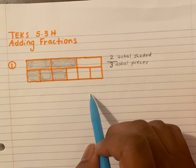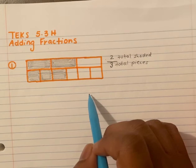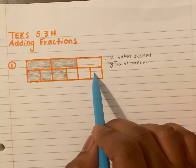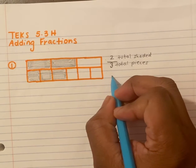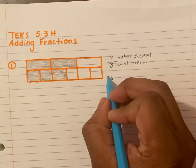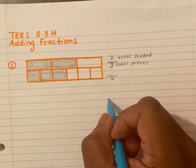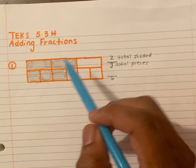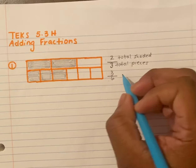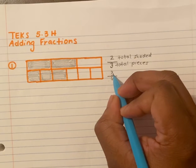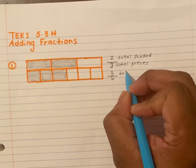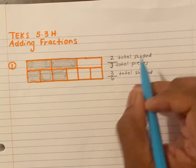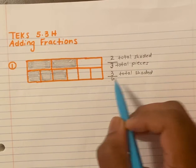Now my bottom section — how many total pieces do we see? One, two, three, four, five, six — a total of six pieces. Of that six, how many are shaded? One, two, three. Once again, the numerator is my total shaded and the denominator is my total pieces.